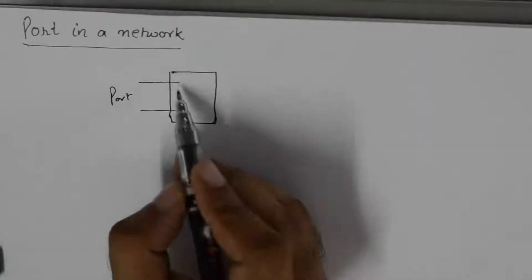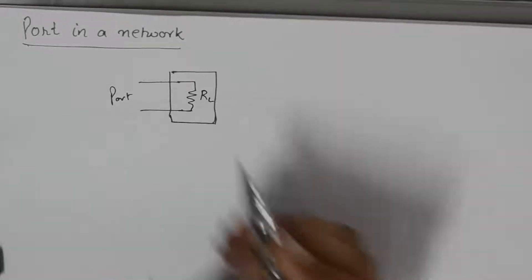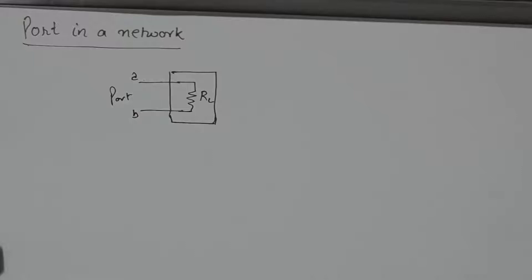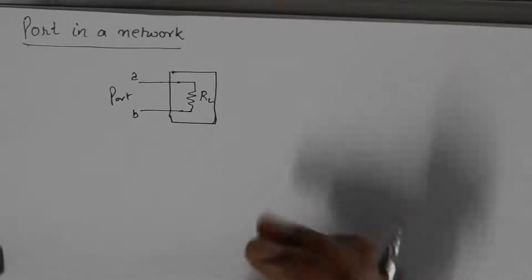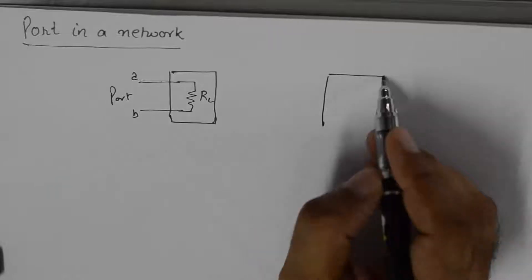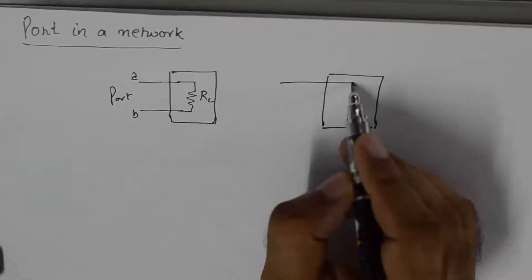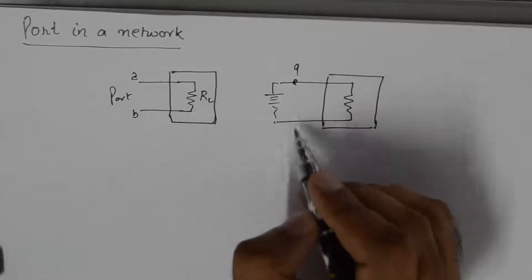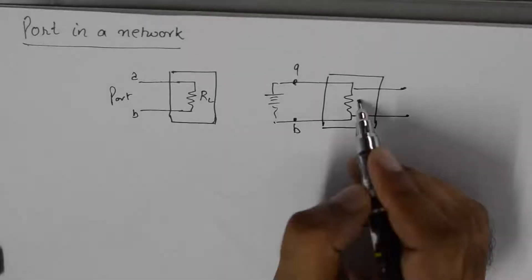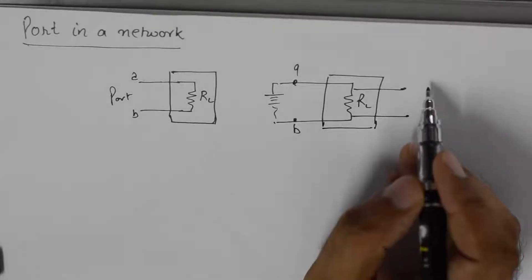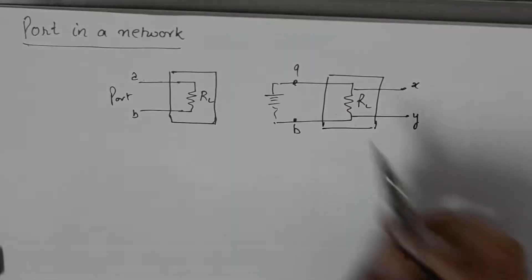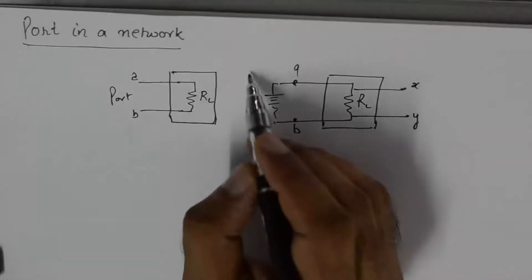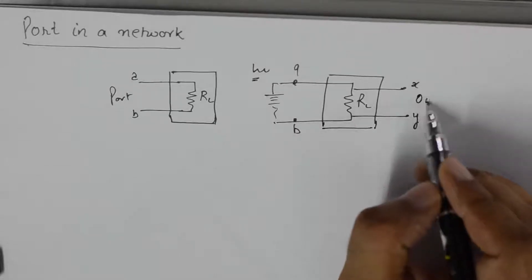For example, this is a one-port network. Similarly, if this rectangular box is extrapolated, we connect the source here to port A and B, and we connect a load resistance here — this port could be known as X and Y. So this becomes a two-port network, where this port is the input port and this port is the output port.